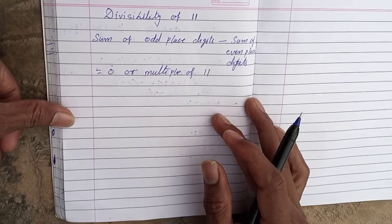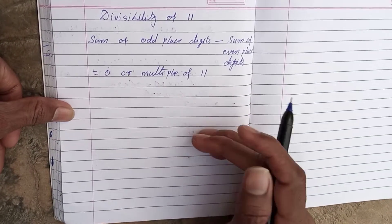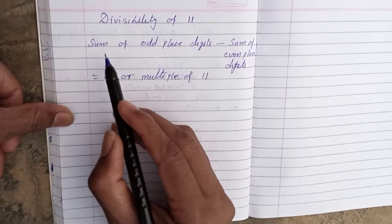Last time we did the multiplication of 11. Today we are going to learn the divisibility test of 11. What is the rule?